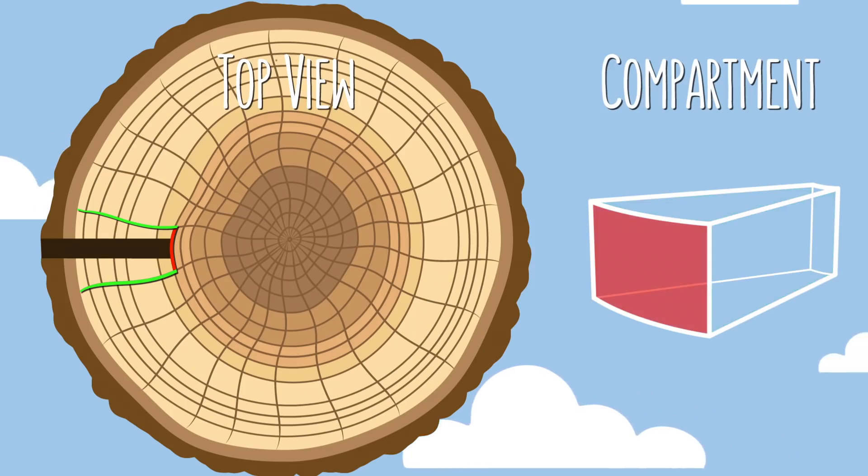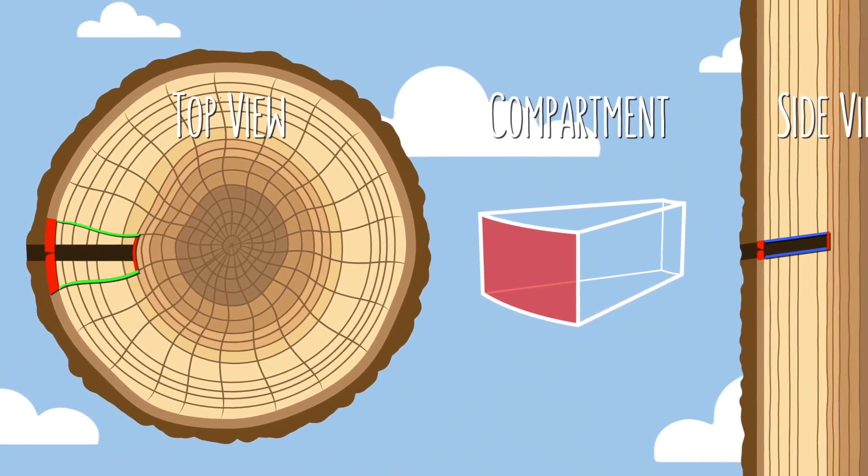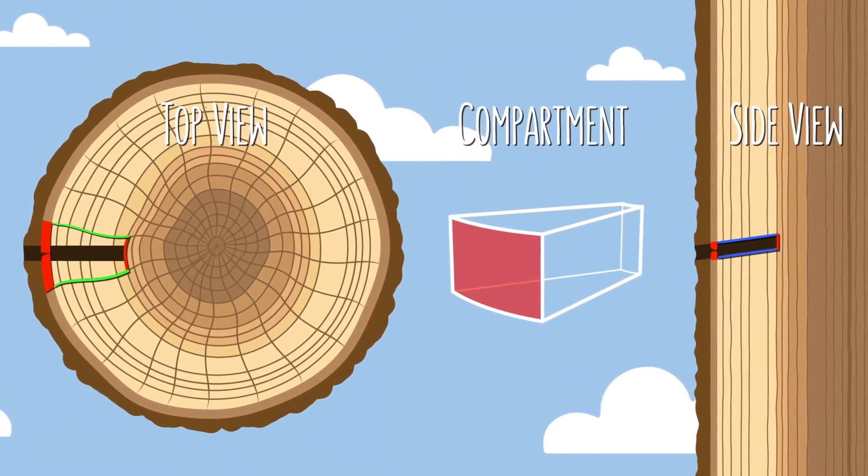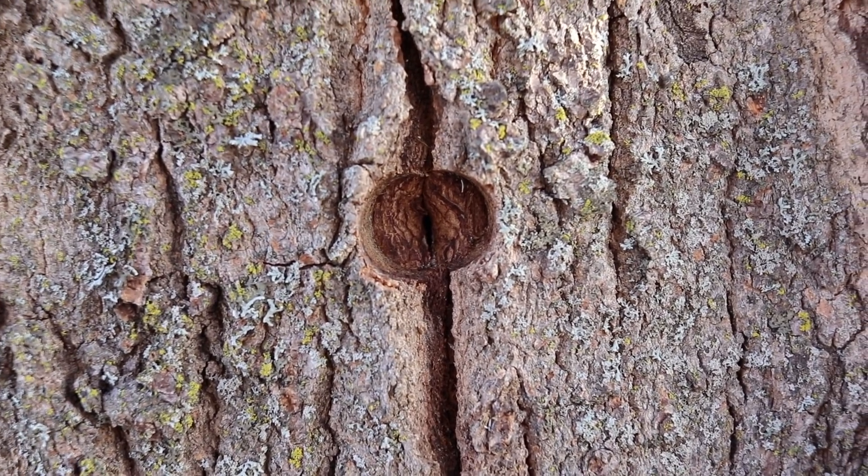And finally, the front wall is created by the cambium. Because remember, it's the only part of the trunk that can actually generate new cells. So it slowly seals up the wound from the outside. This is the strongest line of defense, and it prevents any new fungus from entering the tree. But unfortunately, it also takes by far the longest, like our tap holes from a year ago that are still sealing up today.